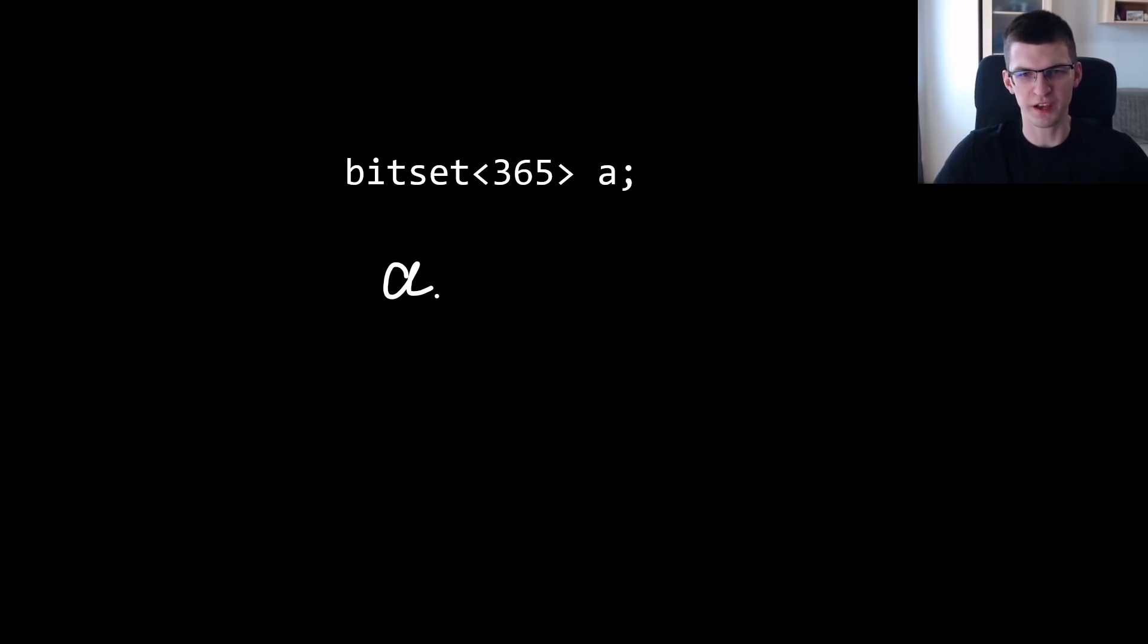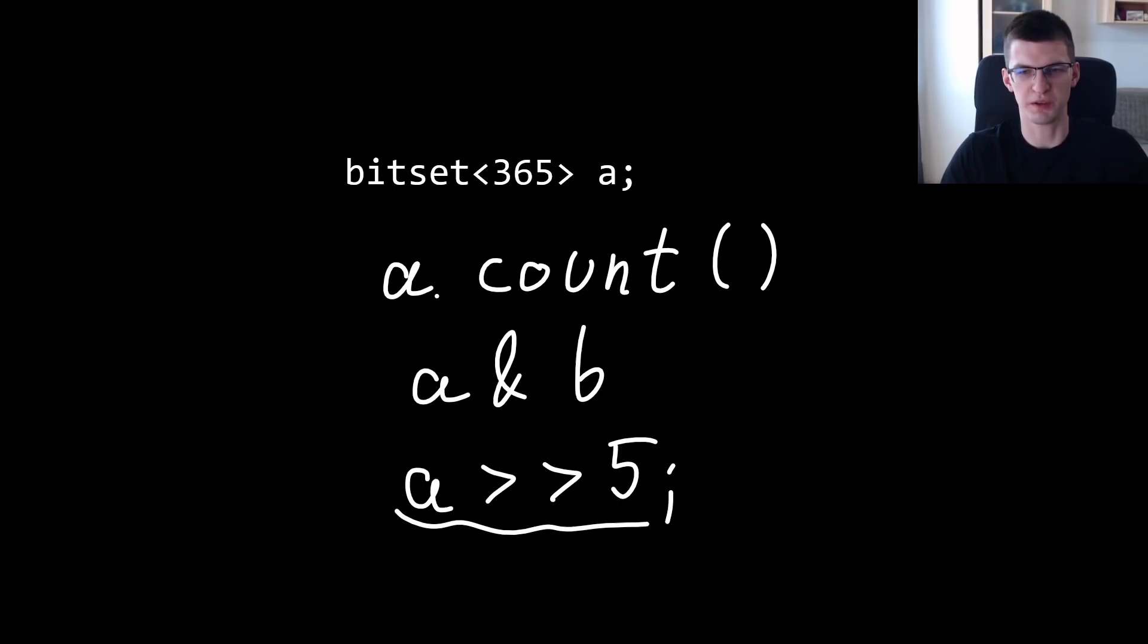Instead of __builtin_popcount you have a.count like you saw already on the previous slide. You also can do a AND b, a OR b, XOR and so on and so on - all the bitwise operations - and you can do a shifted by something or shifted to the other side by for example 5. This will give you a bitset shifted by 5 just like a binary number. Usually you should think about bitset as longer binary mask or set that is able to give you quick intersection, number of elements, and a shift.